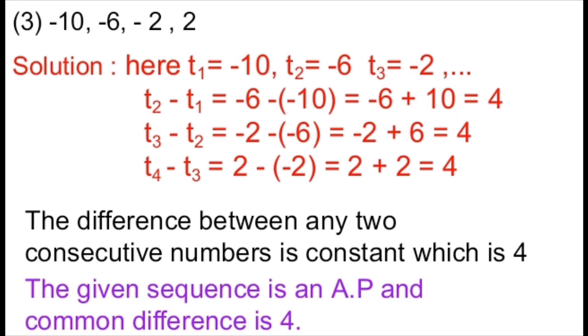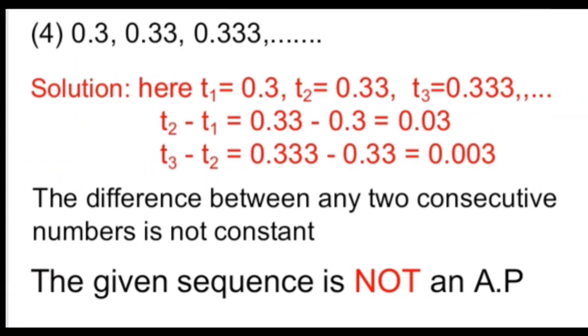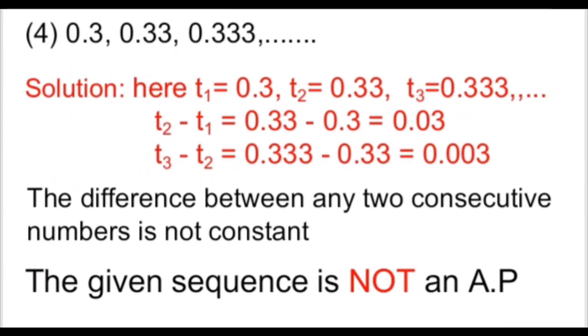Hence this sequence is also an AP and the common difference is 4. Now let us move on to the fourth example, which is a little different.